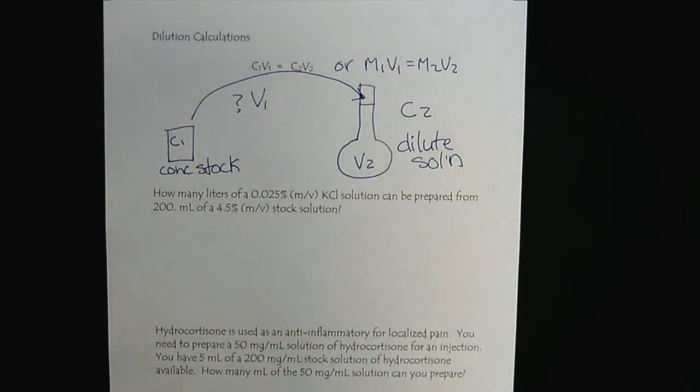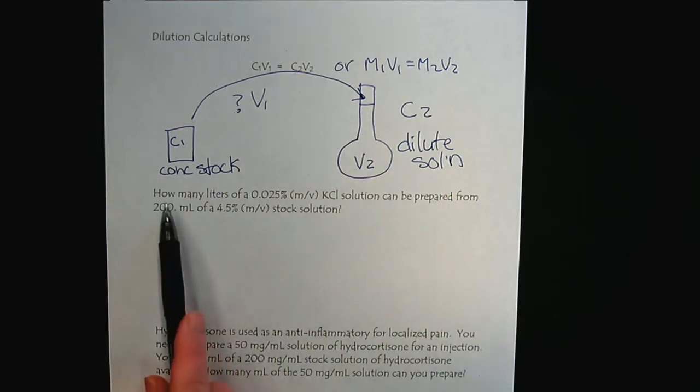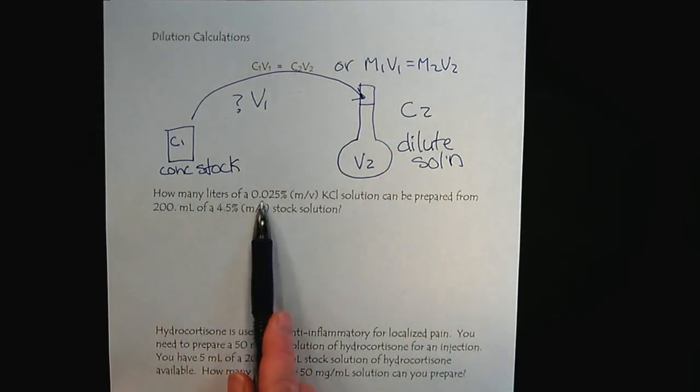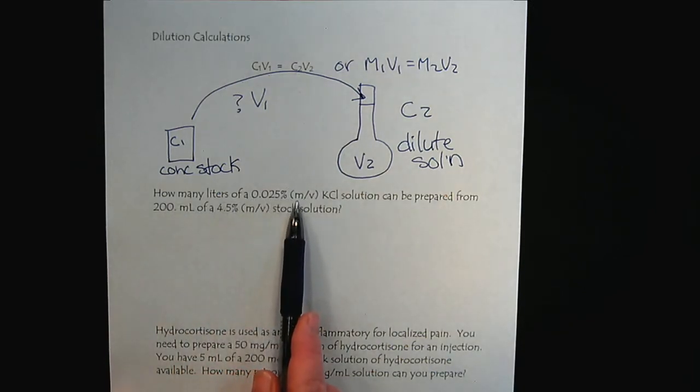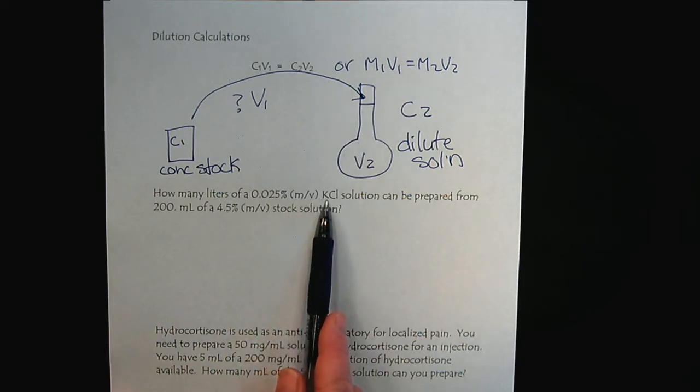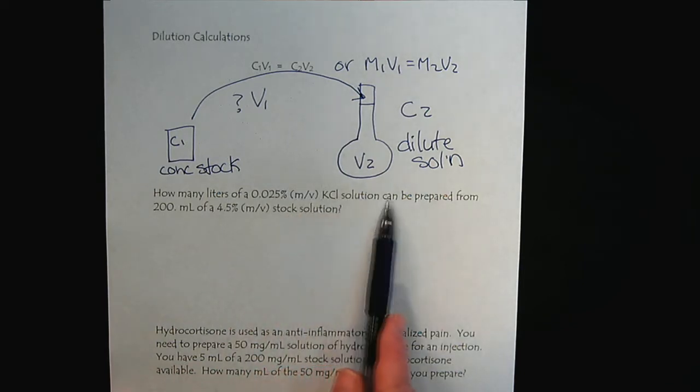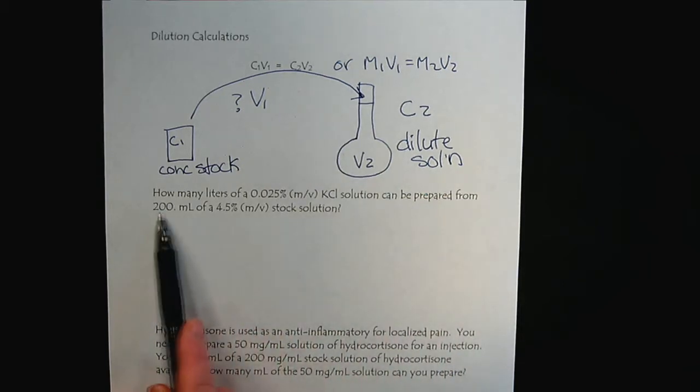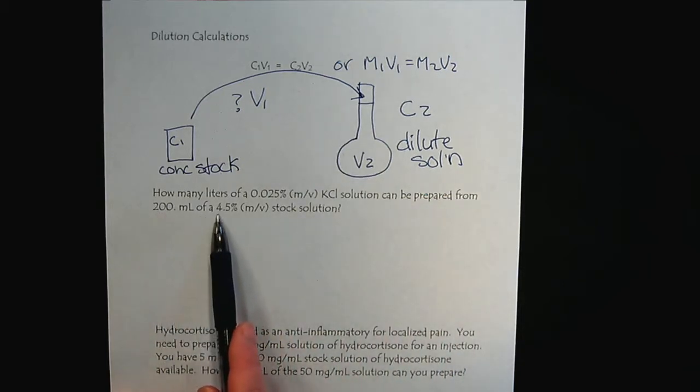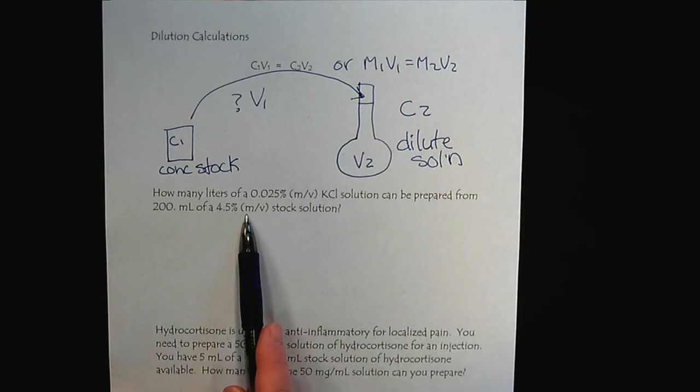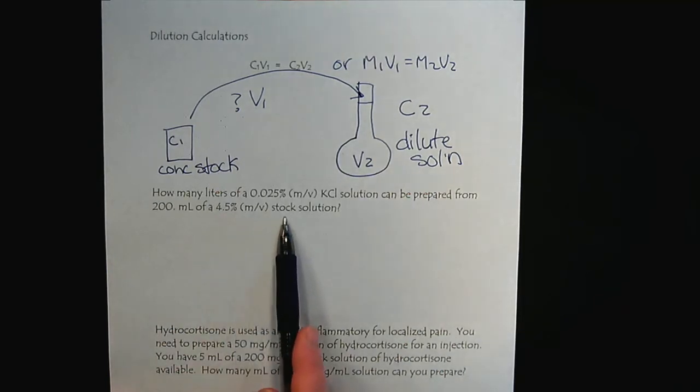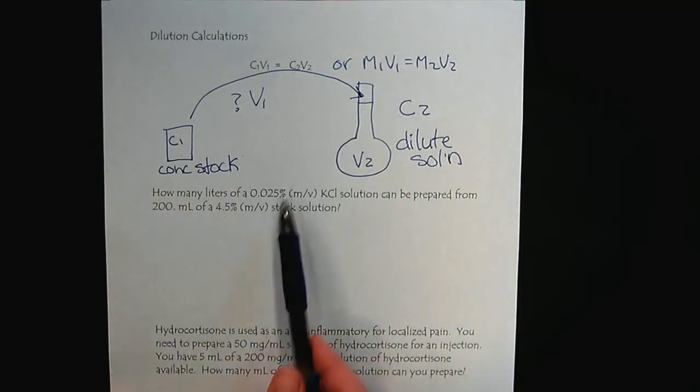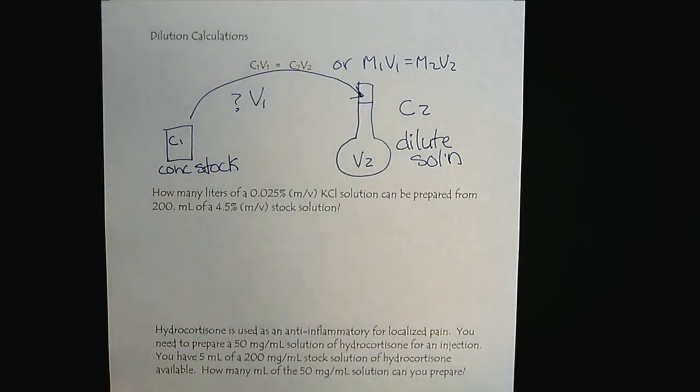We'll just start with a regular, more like an IV solution type question. How many liters of a 0.025% mass over volume KCl solution, potassium chloride, can be prepared from 200 milliliters of a 4.5% mass over volume stock solution? We can use these calculations with any type of concentration unit.